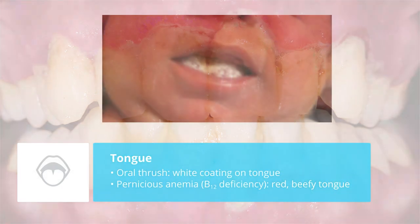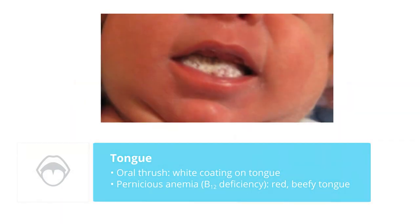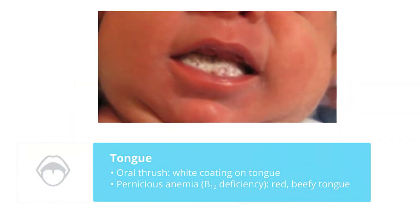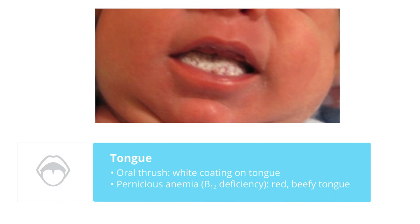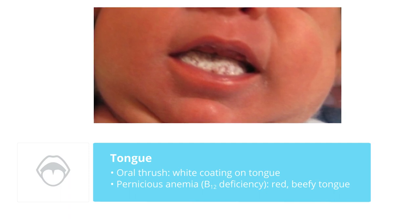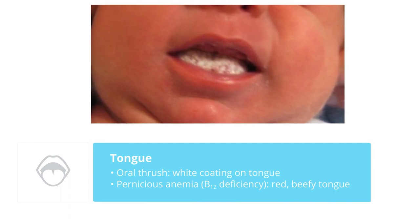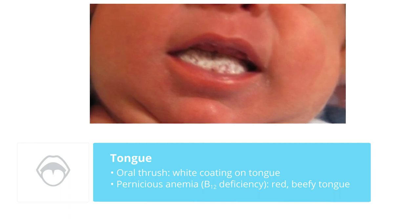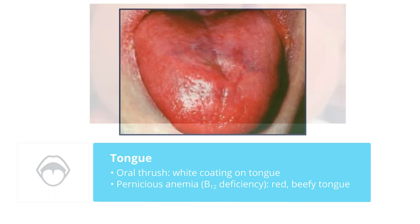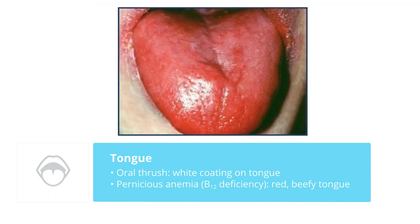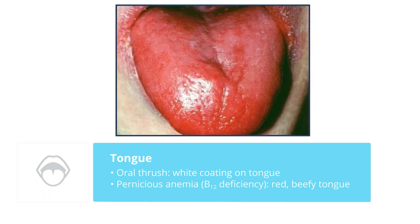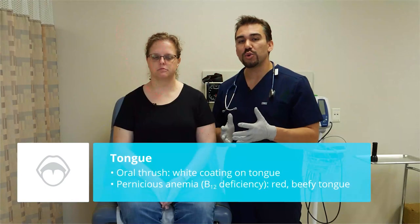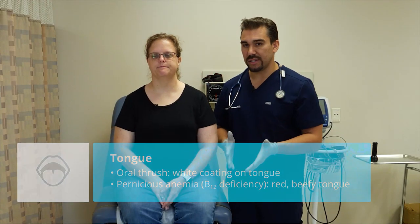Oral thrush is a fungal infection, which is a white coating of the tongue. We typically see that when a patient is taking steroids or inhaling steroids for a respiratory issue. Now if the tongue is red and beefy, it typically means pernicious anemia — a B12 deficiency.